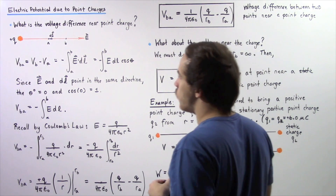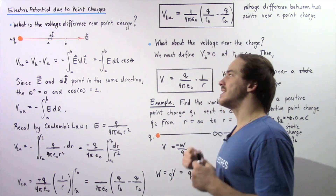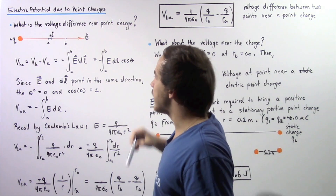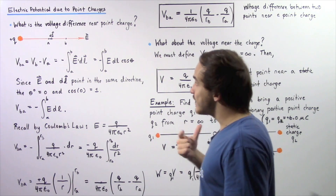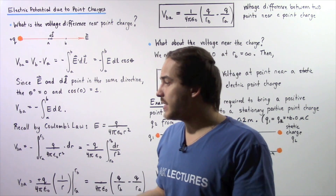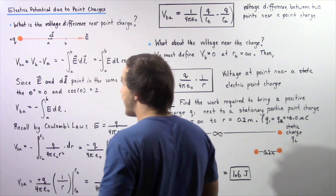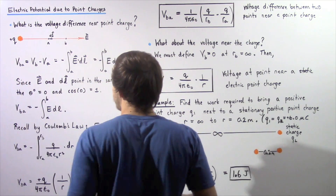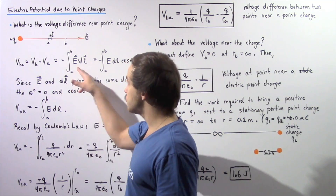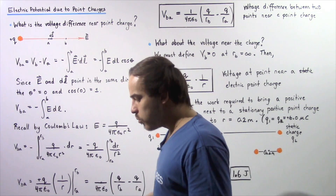Because this is a positive point charge, our electric field lines will begin at the charge and extend outward. To calculate the voltage difference, we use the equation derived in a previous lecture: the voltage difference between points A and B is equal to VB minus VA, which equals the negative of the integral of the dot product of the electric field and the infinitely small distance dL from points A to B.